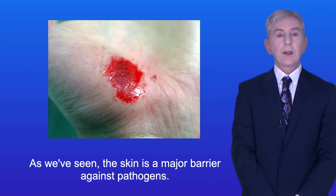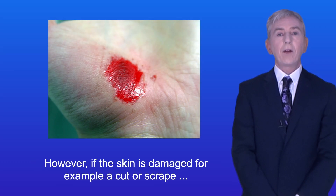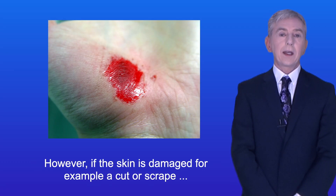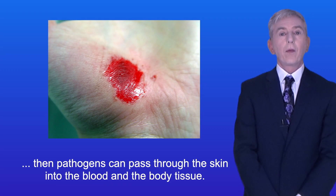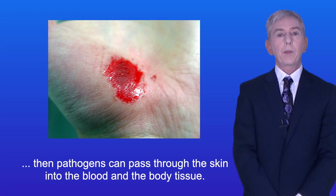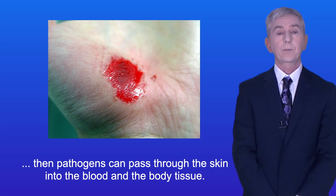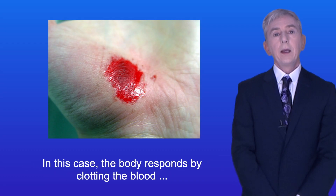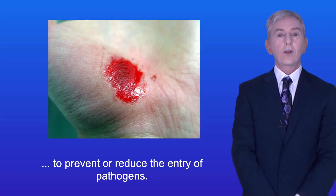Now as we've seen, the skin is a major barrier against pathogens. However, if the skin is damaged — for example a cut or scrape — then pathogens can pass through the skin into the blood and the body tissue. In this case the body responds by clotting the blood to prevent or reduce the entry of pathogens.